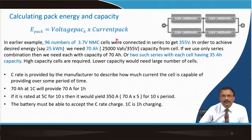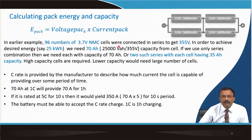Pack energy and capacity are also important. Pack energy equals pack voltage multiplied by pack current. For example, 96 cells of 3.7-volt NMC connected in series give 355 volts. To achieve a desired energy of 25 kilowatt-hours, we need 70 ampere-hours, calculated as 25,000 Wh ÷ 355 V ≈ 70 Ah capacity from the cells.